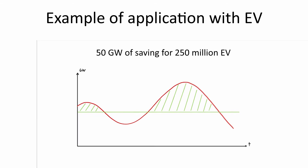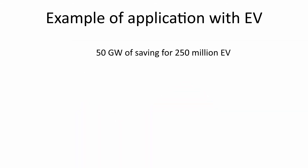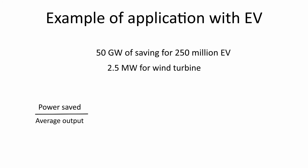Considering an average 2.5 MW for a wind turbine, we can compute how many turbines we are saving thanks to smart grid. It is sufficient to divide the power saved by the average output, obtaining roughly 20,000 wind turbines.